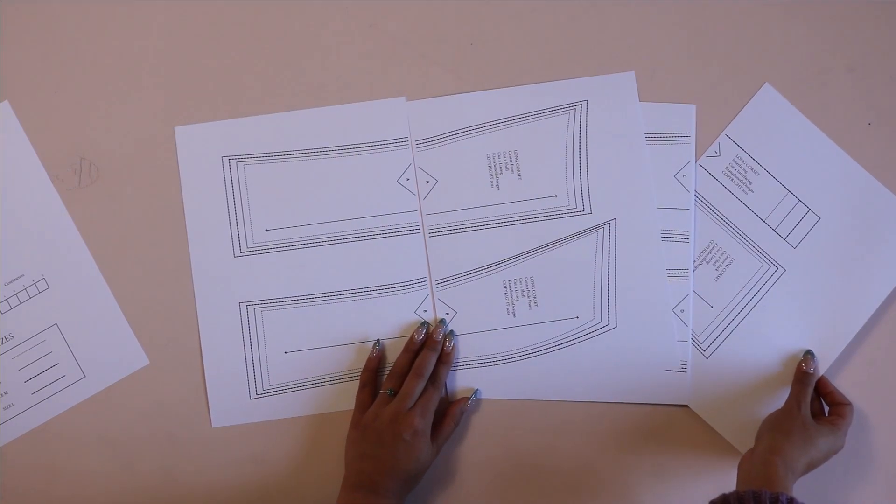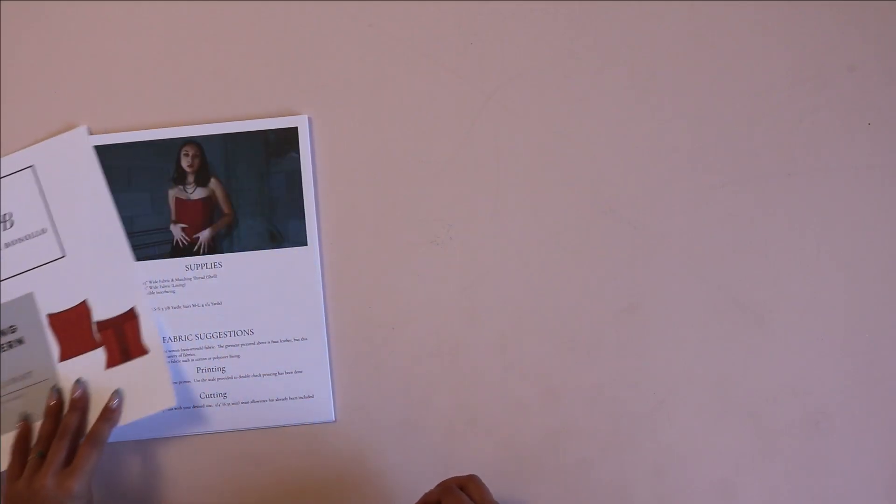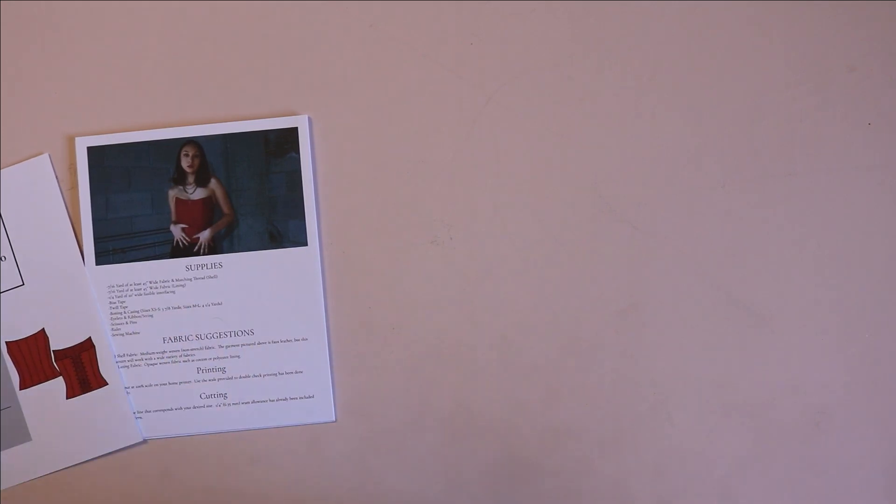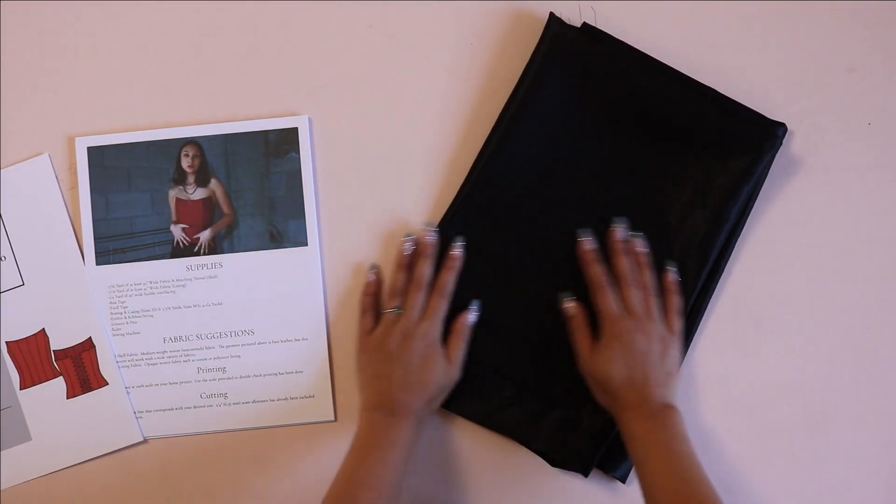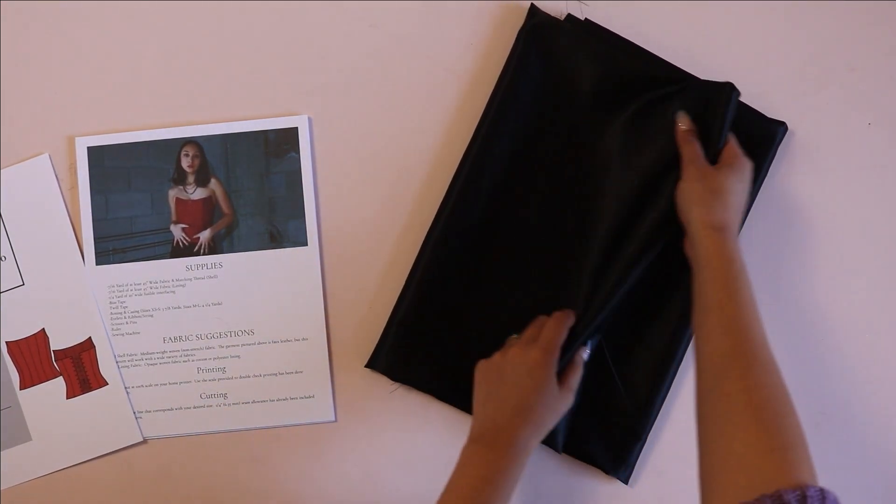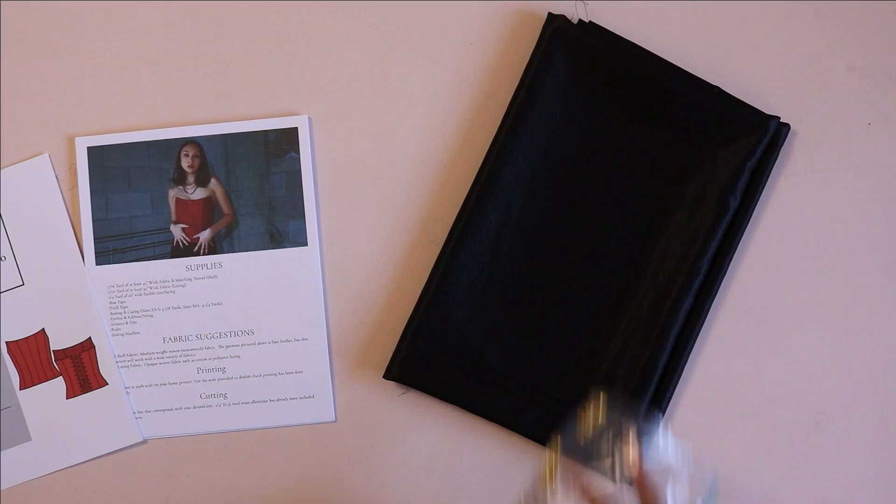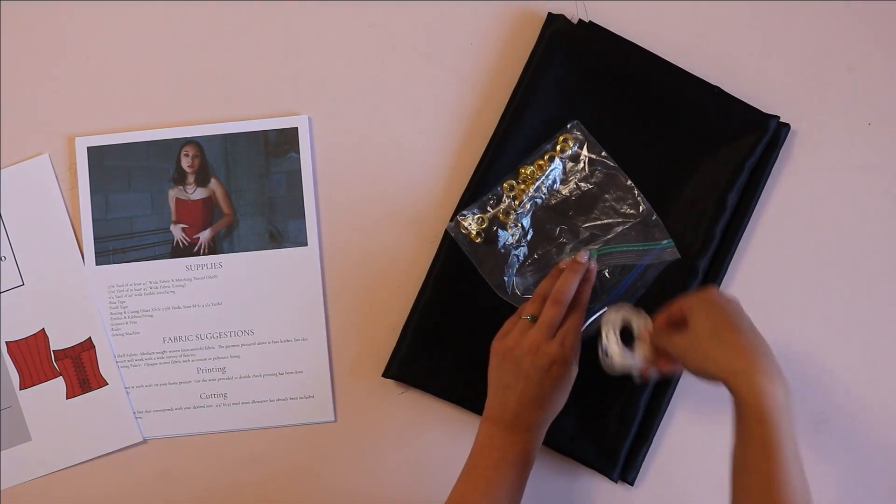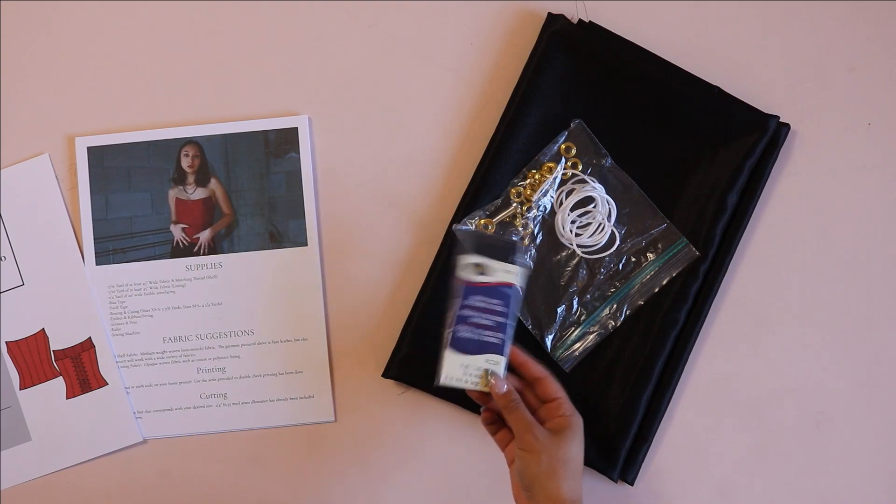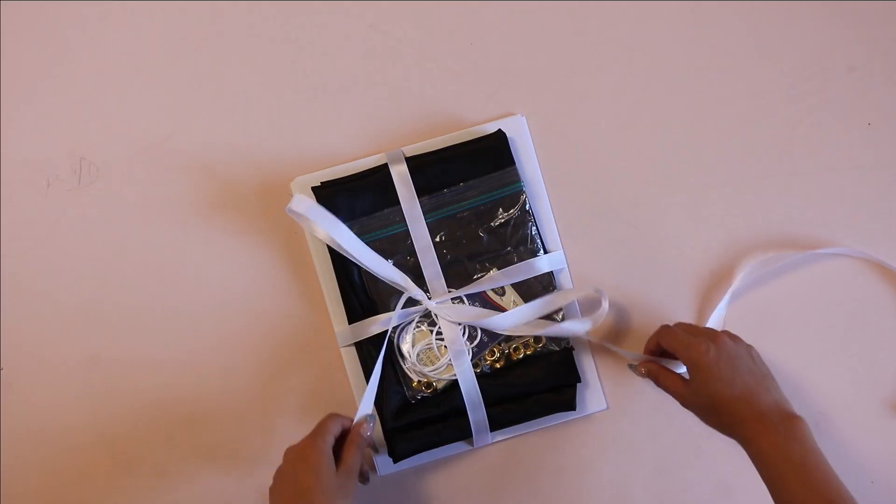After you print out the pattern, go ahead and look at the supplies list on the pattern. Every pattern has this. Then just go ahead and get them all those supplies so that they don't have to do that themselves. Most patterns require things other than just fabric, so make sure you're checking to get all of those notions so that they don't have to source any of those things themselves. Then just package it all nicely, put it in a bag or tie it all up with a bow.